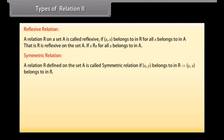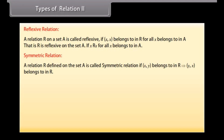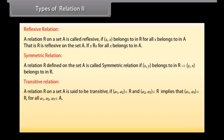Symmetric relation: A relation R defined on the set A is called symmetric relation if (x, y) belonging to R implies that (y, x) belongs to R. Transitive relation: A relation R on a set A is said to be transitive if (A1, A2) belongs to R and (A2, A3) belongs to R implies that (A1, A3) belongs to R, for all A1, A2, A3 belonging to A.